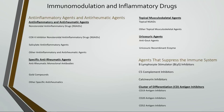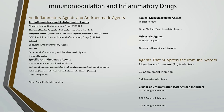Moving on to immunomodulation and inflammatory drugs. Keep in mind that a lot of the classes and drugs mentioned in this section are specialty drugs that you won't see as often. Starting off with inflammatory agents and anti-rheumatic agents, we have NSAIDs, COX-2 inhibitor NSAIDs, salicylate anti-inflammatory agents, and other anti-inflammatory and anti-rheumatic agents. Specific anti-rheumatic agents include anti-rheumatic monoclonal antibodies, gold compounds, and other specific anti-rheumatics.